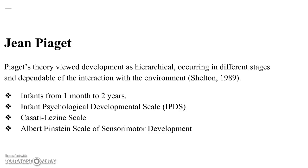Scales based on Piaget's theory were usually made for infants between 1 month and 2 years old. Some examples of these assessments are the Infant Psychological Developmental Scale, the Cassidy-Lisein Scale, and the Albert Einstein Scale of Sensory-Motor Development. This last assessment measures intermediaries, object exploration, combination of objects, skills in apprehension, object permanence, and functioning in three-dimensional space.